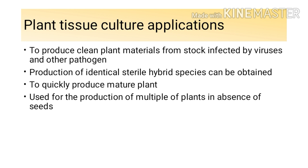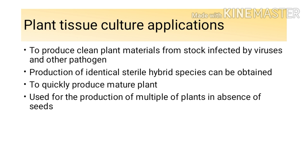The next application is that plant tissue culture is useful for the production of multiple plants in the absence of seeds. With the help of plant tissue culture, you don't need to perform sexual reproduction. Even if you don't have a seed, you can also use protoplast fusion, or perform herbiculture or anther culture to also produce your plant.